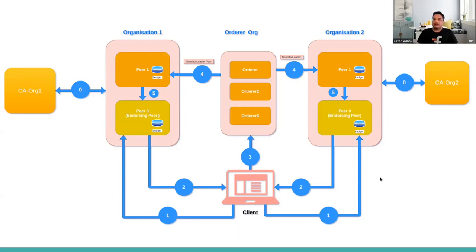The number of endorsing peers depends on how many are defined and on the chaincode policy set during deployment of the chaincode. If no explicit policy is defined, the implicit default is majority. With two organizations, the majority is two — so we need two endorsements for successful execution of the transaction.